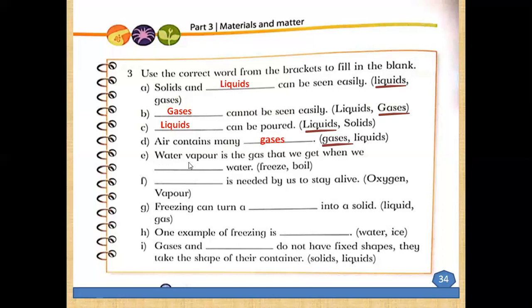Number e: what is the gas we get when we dash water? When you boil water, you get water vapor. Water vapor is the gas that we get when we boil water. If you freeze water you get ice, but if you boil water you get water vapor.